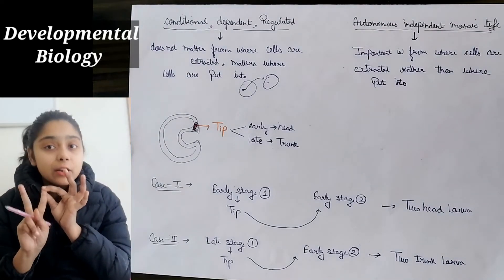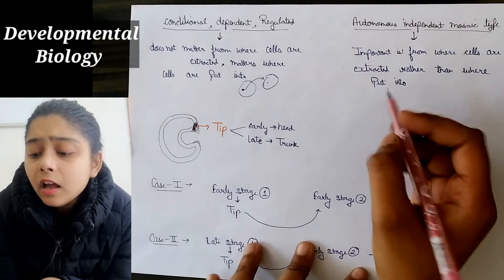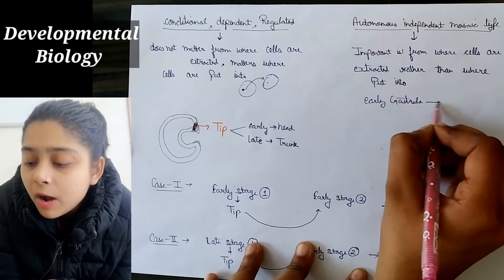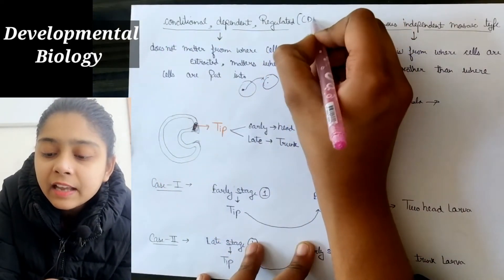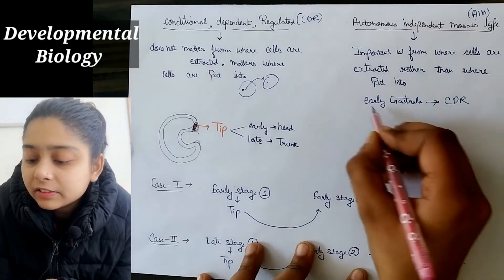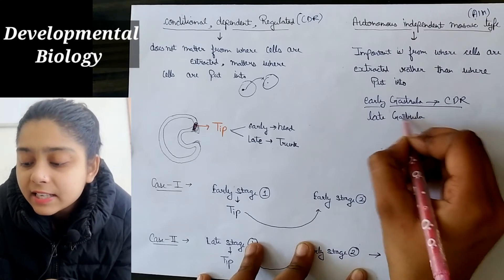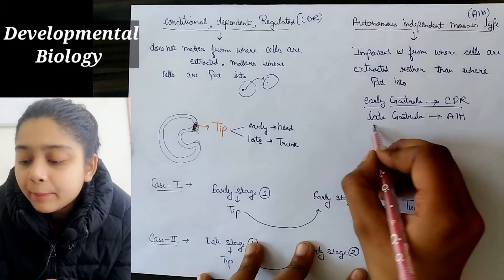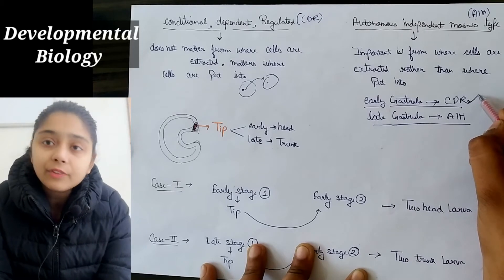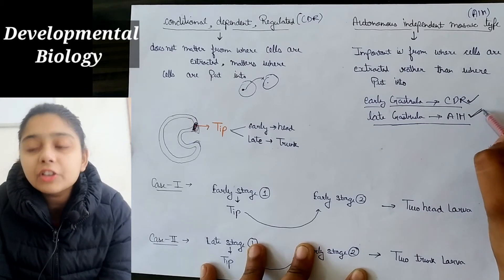To summarize: there are two cell types — CDR and AIM. In the early gastrula stage, cells are CDR (Conditional Dependent Regulated). But when the late gastrula stage comes, cells become AIM. So in early gastrula, cells are not yet specified in their behavior and function, but by late gastrula, they have taken on their specified function.